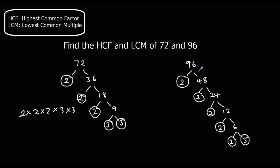For 96: 2 times 48, 2 times 24, 2 times 12, 2 times 6, and 2 times 3. So 96 as a product of its prime factors is 2 times 2 times 2 times 2 times 2 times 3.